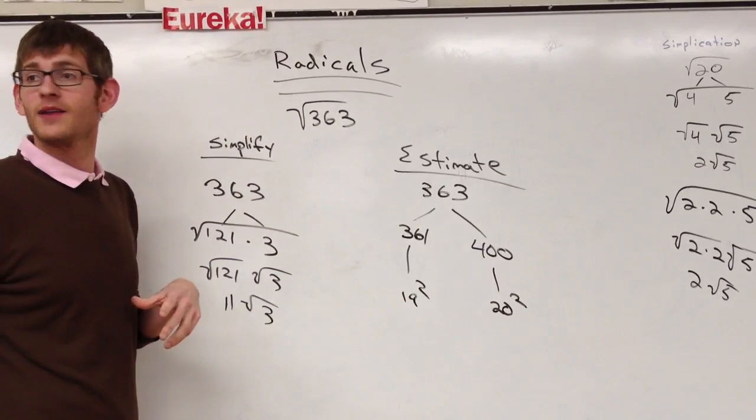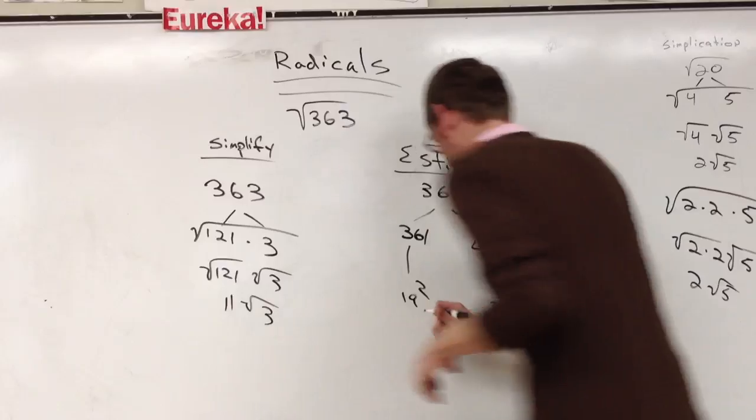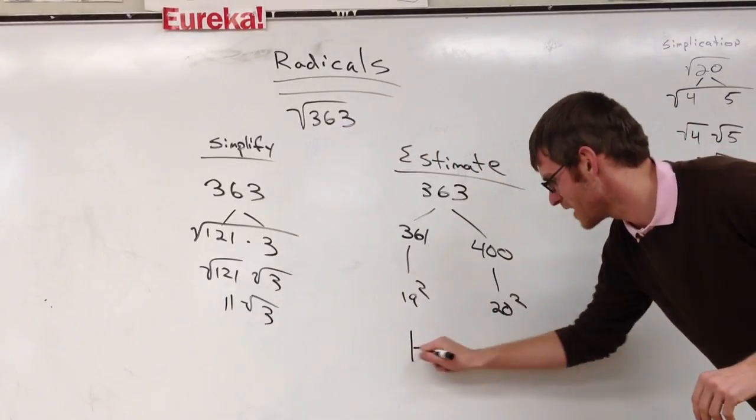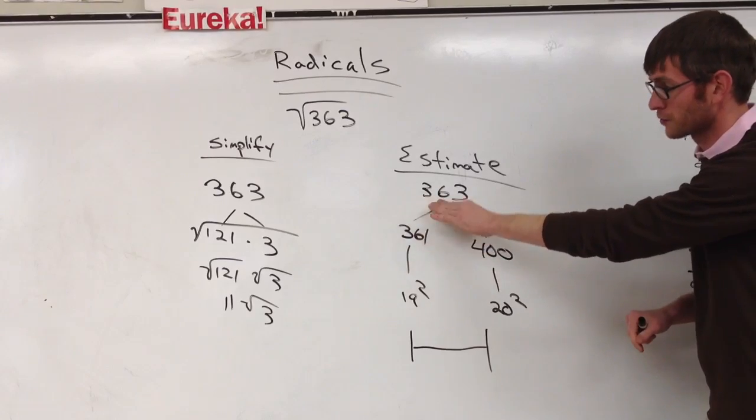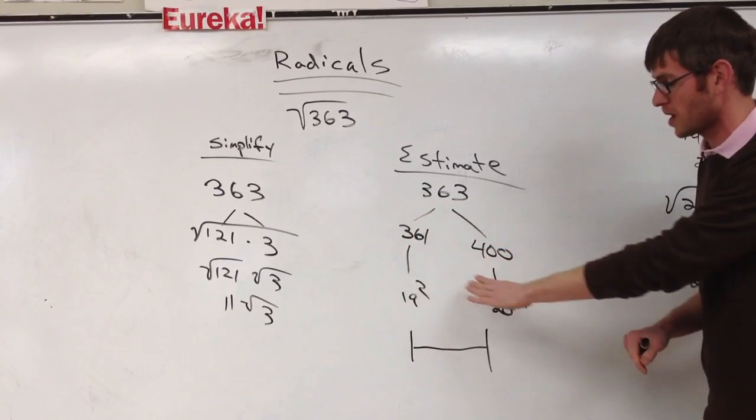And then, oh, that's over here. Okay, so now we have 19 and 20. So here's my question. Let's stick with Lisa. Lisa, is 363 closer to 361 or closer to 400?